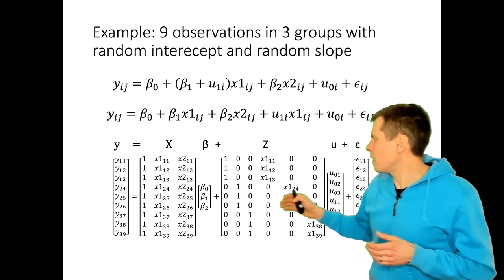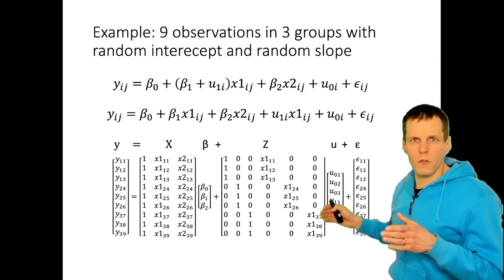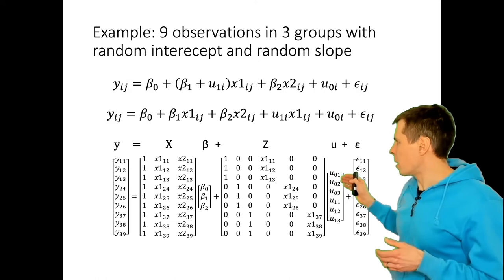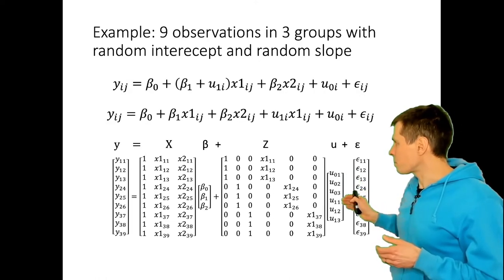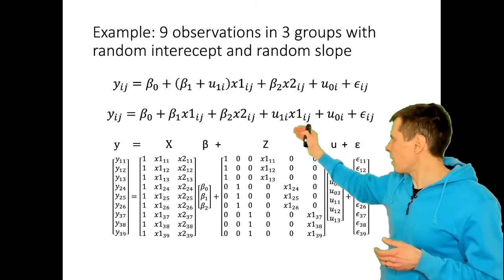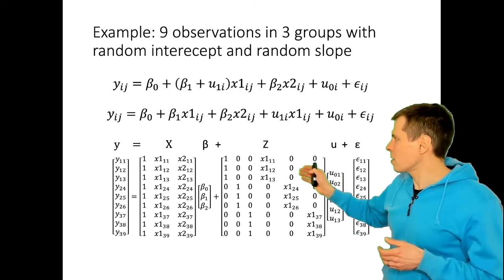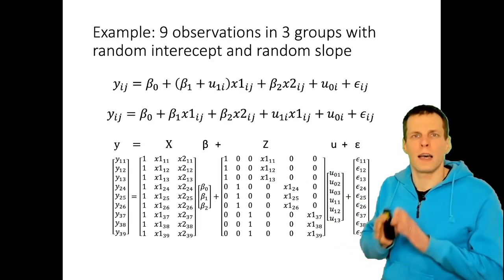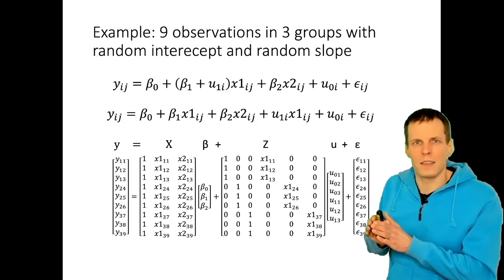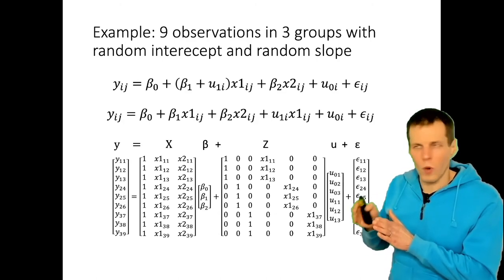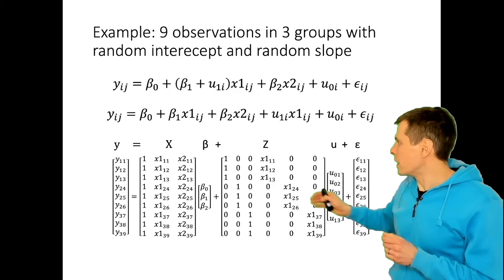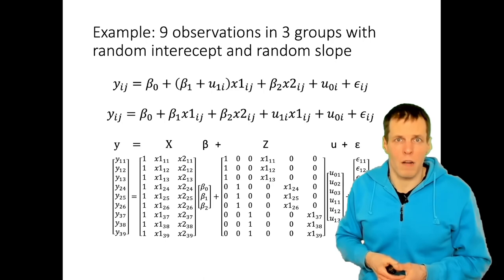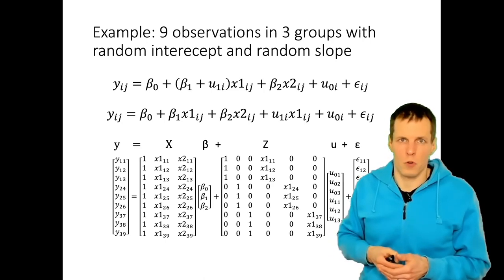The fixed part is the same Xβ. There's no difference. And now what we have here is that instead of simply adding each random effect by multiplying it by one, we multiply these u1i random effects with the values x11, x12, x13 and so on. So instead of adding the random effects by multiplying them each by one, we add them by multiplying them with data. And then we get the covariance matrix similarly and the estimation proceeds similarly.